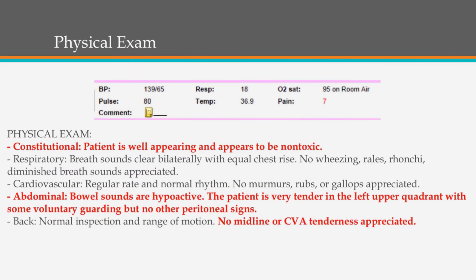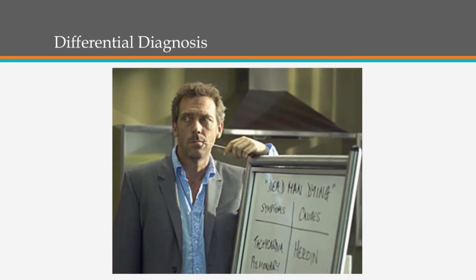On physical exam, he's pretty well-appearing. He's sitting in bed, a little obese, but otherwise really no remarkable findings on the exam — with the exception of the abdominal exam, where he's tender in the left upper quadrant with some voluntary guarding. He's trying to be tough, but you can tell he's hurting. His vitals: he's normotensive, not tachycardic, afebrile, and not hypoxic.